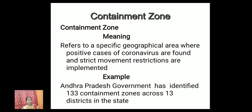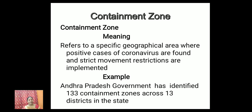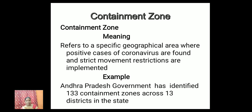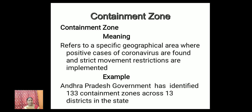Here goes the word containment zone. What does it mean? It refers to a specific geographical area where positive cases of coronavirus are found and strict movement restrictions are implemented. For example, the Andhra Pradesh government identified 133 containment zones across 13 districts in the state.